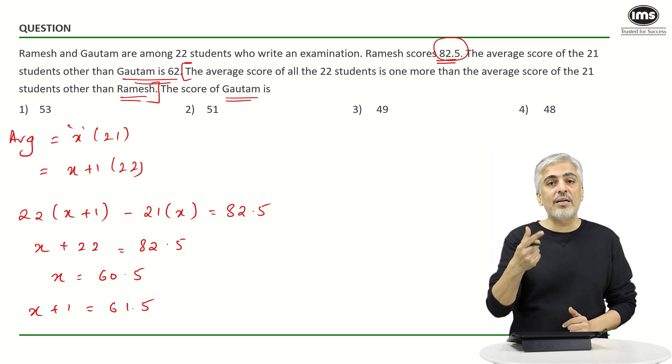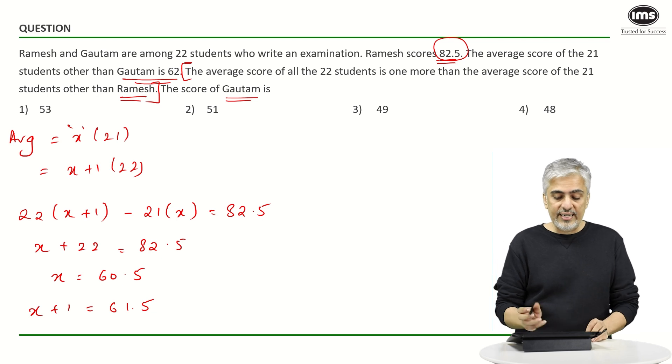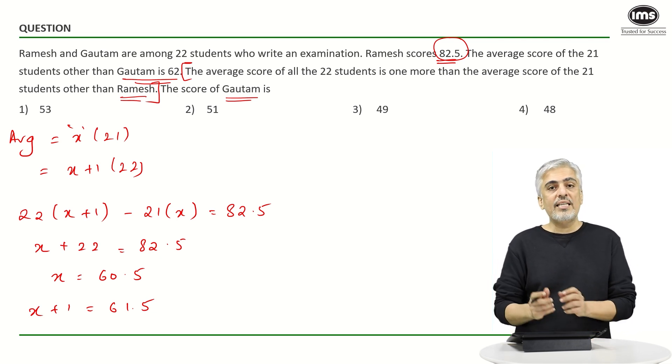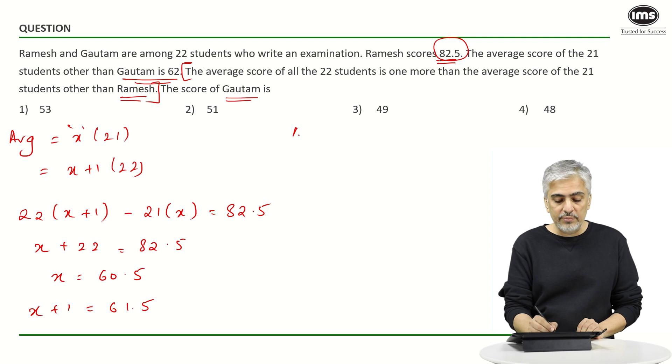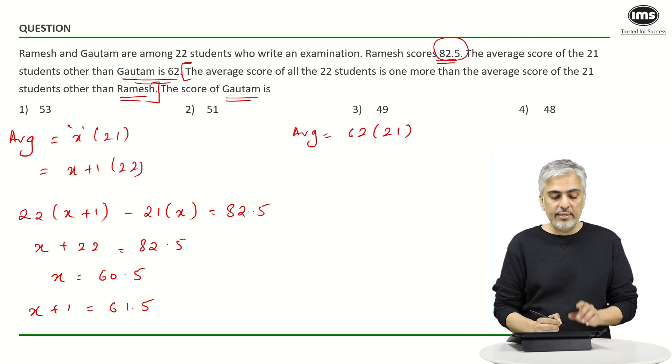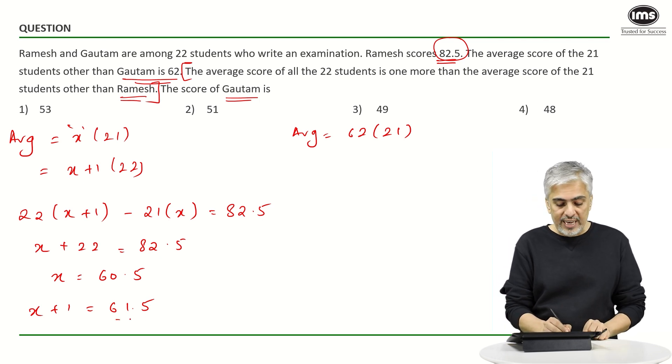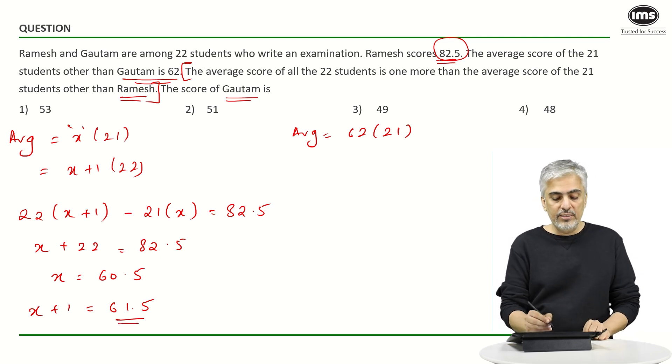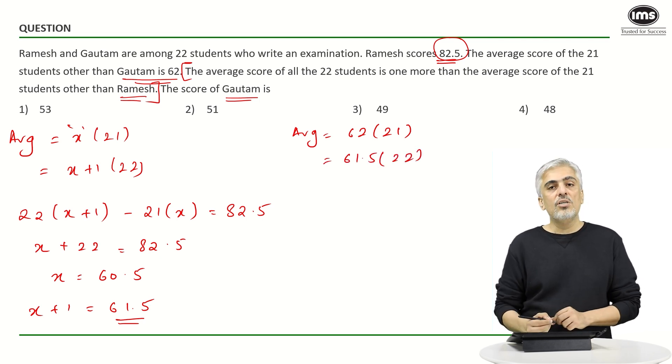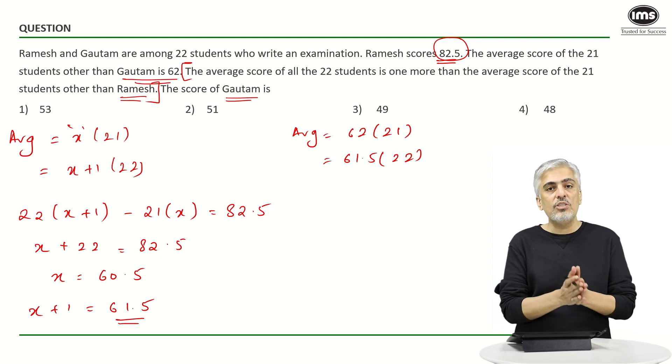And now let's read the part about Gautam. So what have they said? The average score of the 21 students other than Gautam is 62, that means if I don't include Gautam the average is 62 and there are 21 students over here. And you know that if I include everybody, that is 22 students, the average is 61.5. So average is 61.5 for all the 22 students.